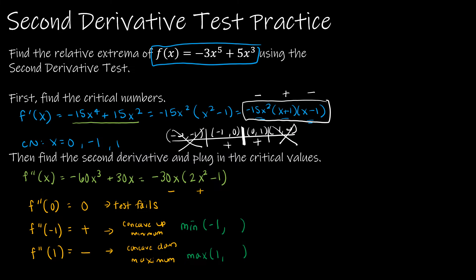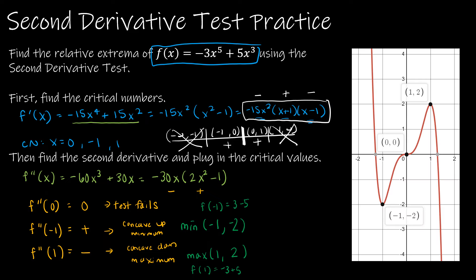To finish, I find the function values. f(-1) = (-1)(-3) - 5 = -2, so the relative minimum is (-1, -2). For the max, f(1) = -3 + 5 = 2, so the relative maximum is (1, 2). On the graph, (0, 0) shows up, but it's neither a min nor a max — the function just leveled out for a moment and kept going.